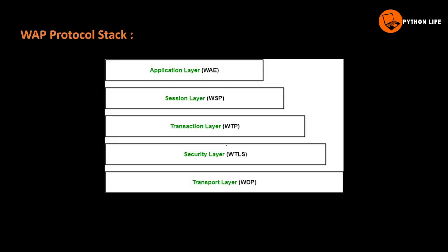The WAP protocol stack has five layers: the Application layer, the Session layer, the Transaction layer, the Security layer, and the Transport layer.